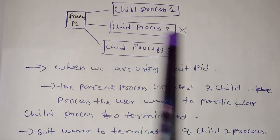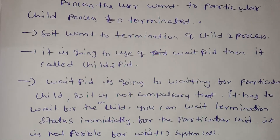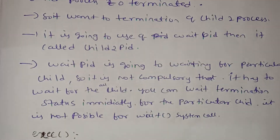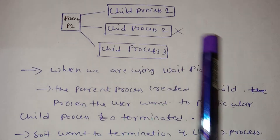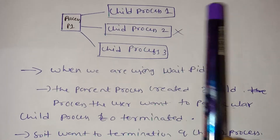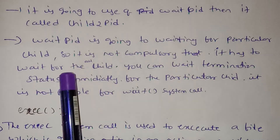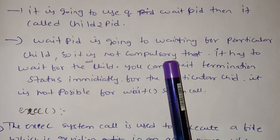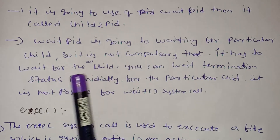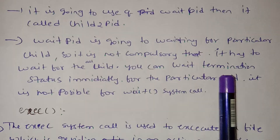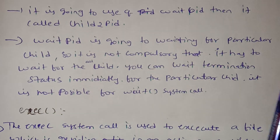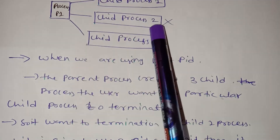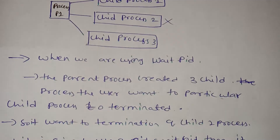WaitPID is used when you want to wait for a particular child process to terminate. With wait, it is compulsory to wait for all children. But with waitPID, you can wait for a specific child process — it is not necessary to wait for all children.